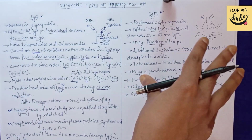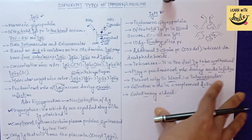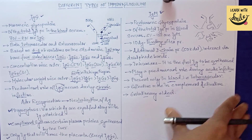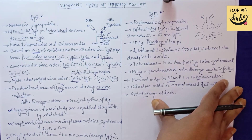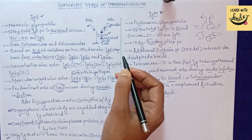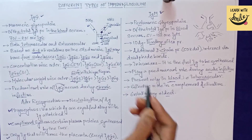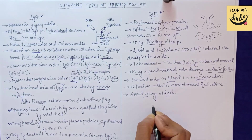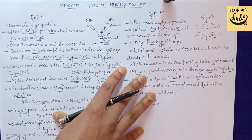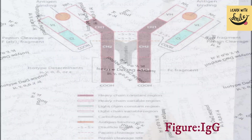Now that we have discussed the structure and roles of IgG and IgM, please carefully look at the images provided to compare their structural similarities and dissimilarities and the roles each plays. With this, let me wrap up this session — if you liked this content, please share and subscribe.